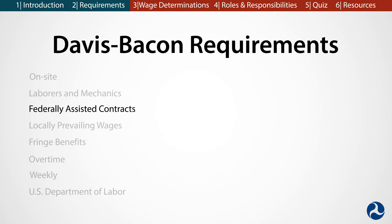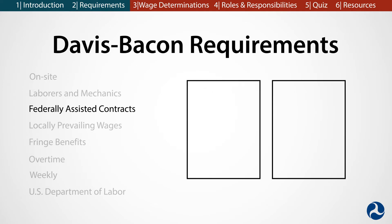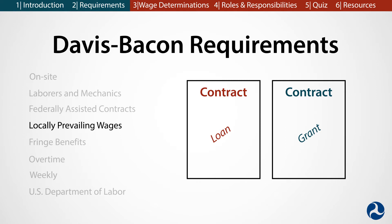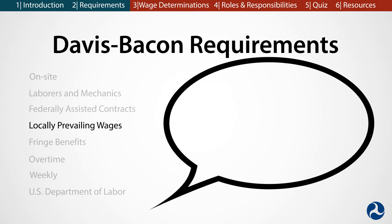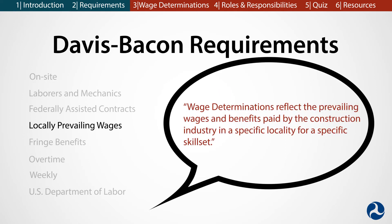Federally assisted contracts. Any construction project that receives federal assistance falls under the authority of the DBA. That means if a project receives a federal grant or loan, it must comply with the requirements of the Davis-Bacon Act. Locally prevailing wages. Wage determinations reflect the prevailing wages and benefits paid by the construction industry in a specific locality for a specific skill set.